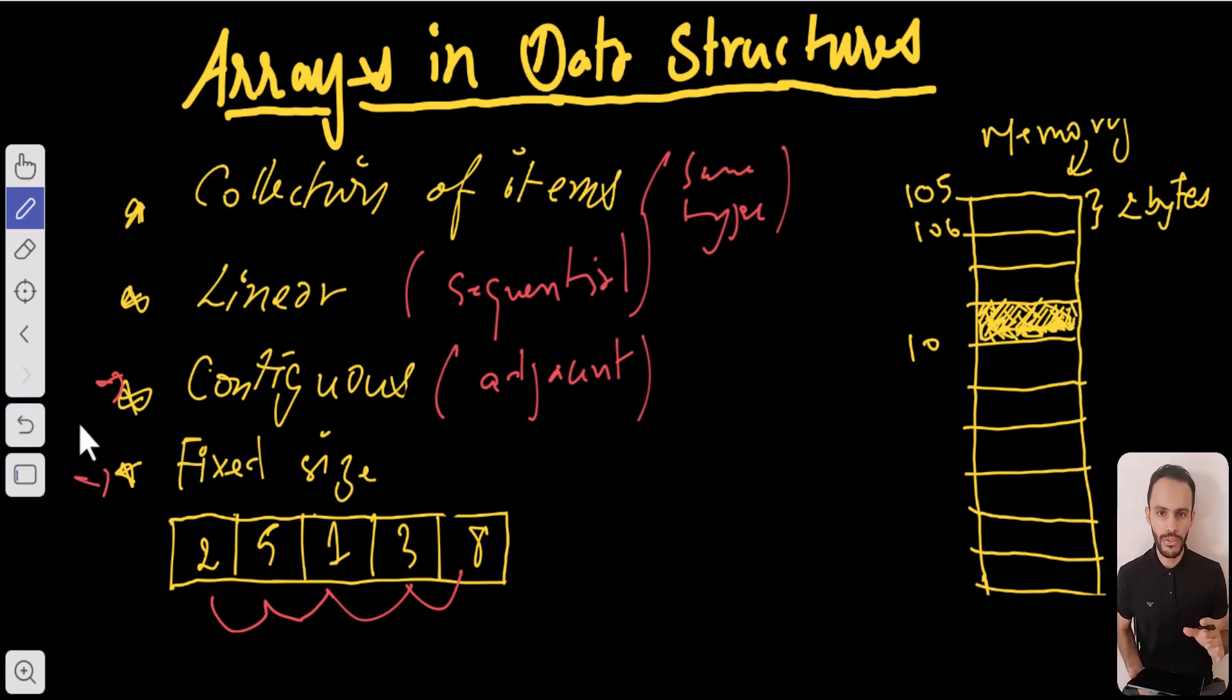The final characteristic about arrays is that they have a fixed size. But there's a caveat here - most programming languages now give you the ability to create somewhat dynamic arrays, but they're doing some heavy work behind the scenes to make them look dynamic.